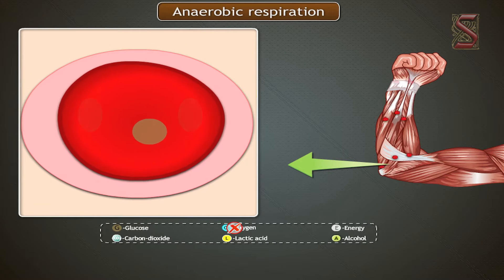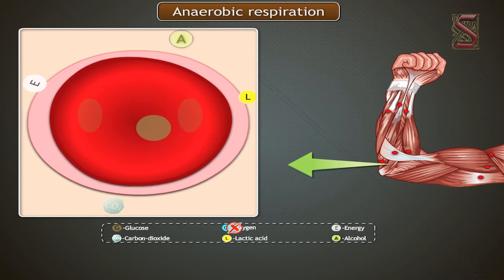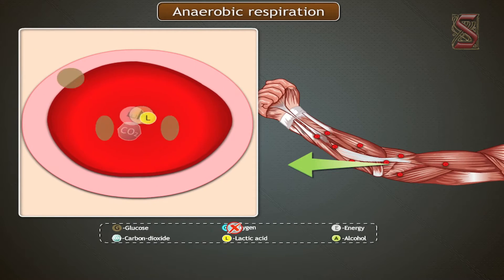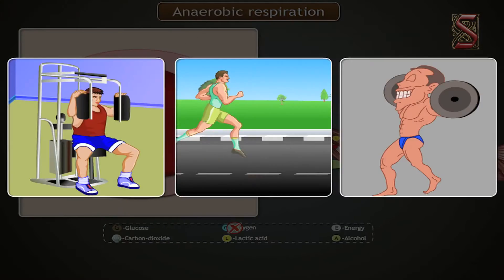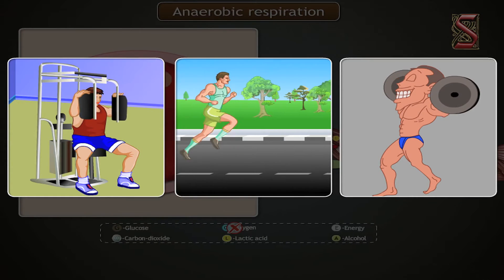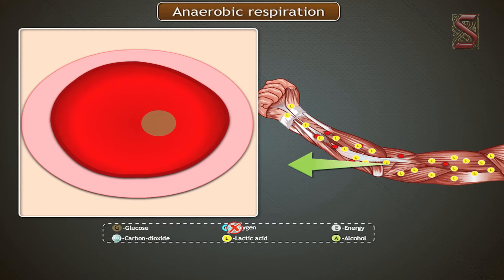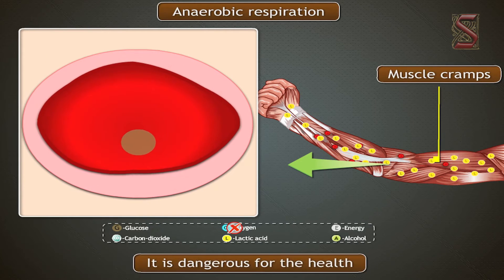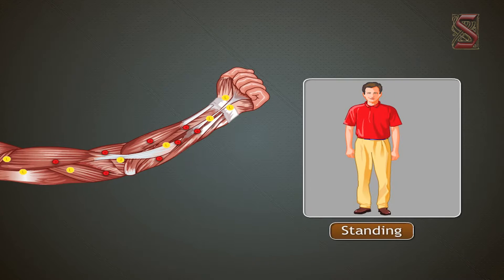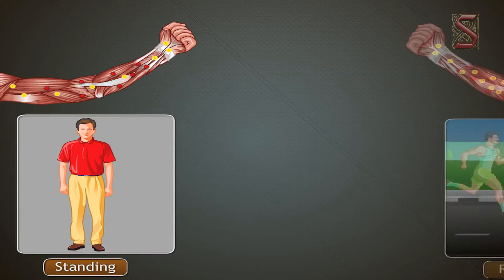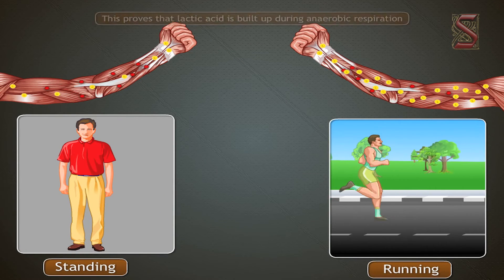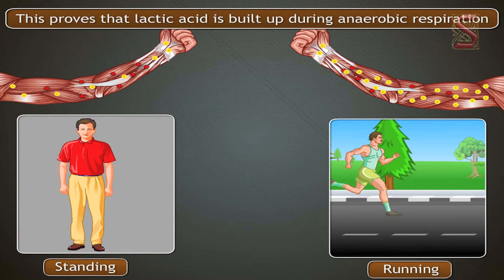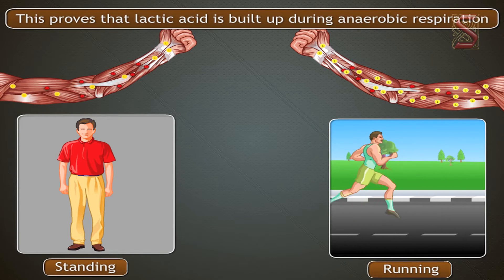Anaerobic respiration provides enough energy to keep overworked muscles going for a short period. But if a person does continuous rigorous exercise, lactic acid starts building up in the bloodstream, producing muscle cramps. It is dangerous for health. Measuring lactic acid levels in a person who is standing versus after running a race shows much higher levels in the second case, proving lactic acid builds up during anaerobic respiration.